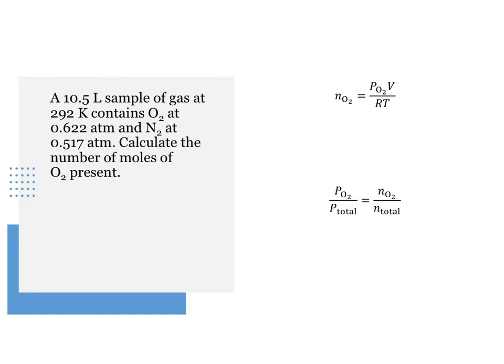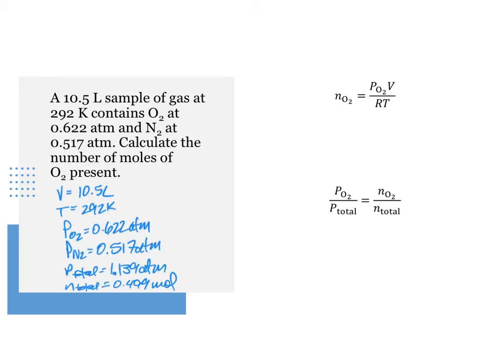Continuing with this scenario, let's find out how many moles of oxygen are present in this mixture. Using the ideal gas law again and the partial pressure of oxygen, we get N sub O2 or the moles of O2 gas equal the partial pressure of oxygen times the volume divided by R times T.